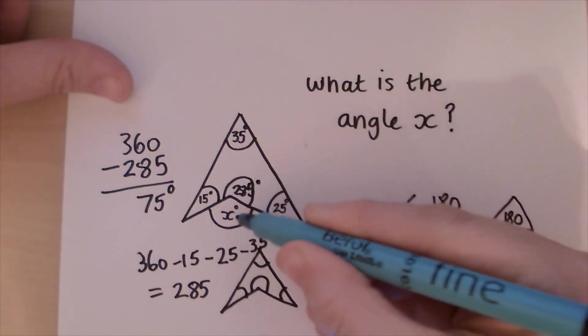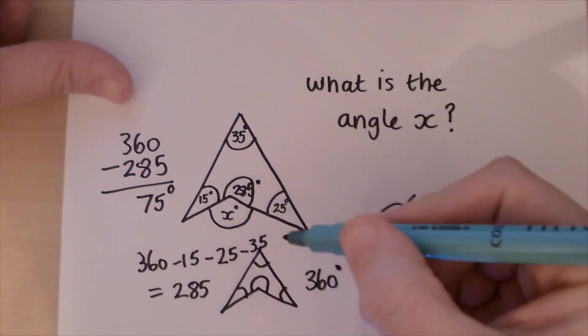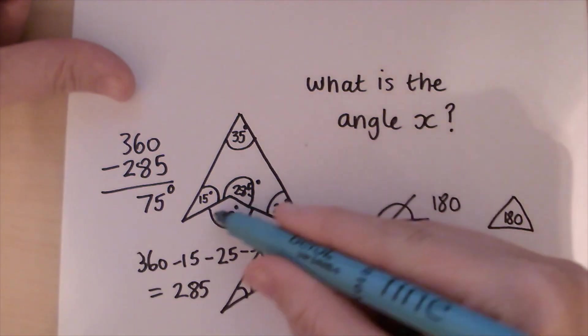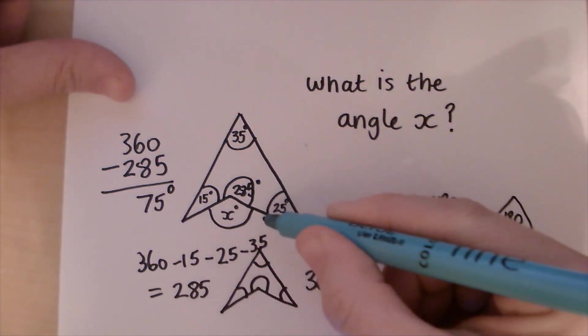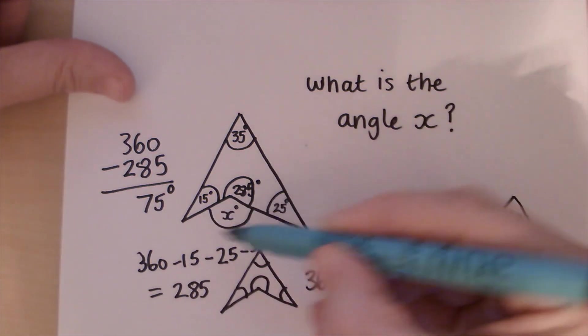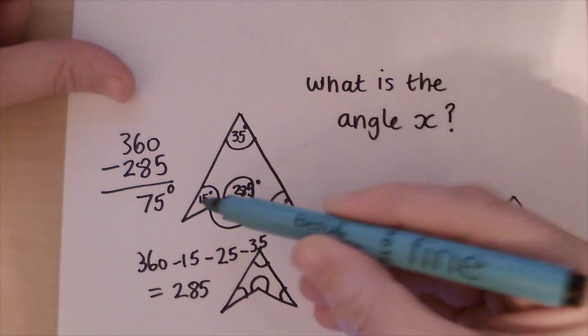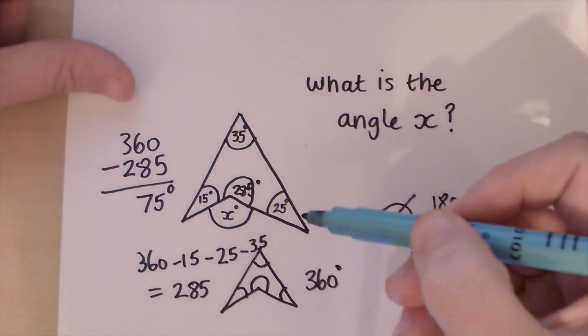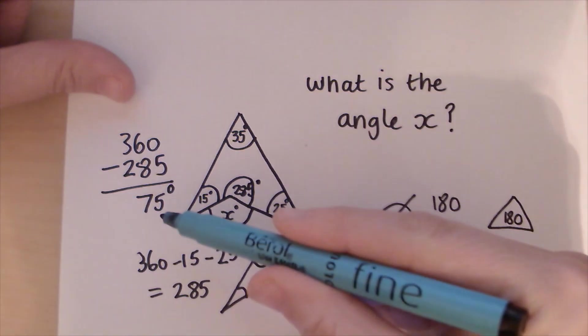So well done if you've got your answer of 75 degrees. You can't always rely on the picture. You can't always say, oh, that looks more than 90 because sometimes pictures are not drawn to scale. So the answer to X is 75 degrees.